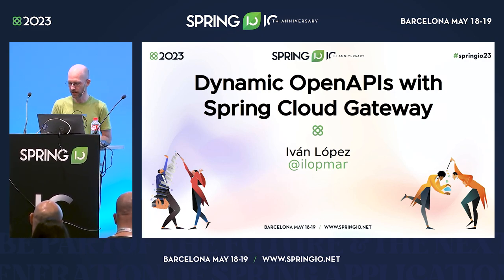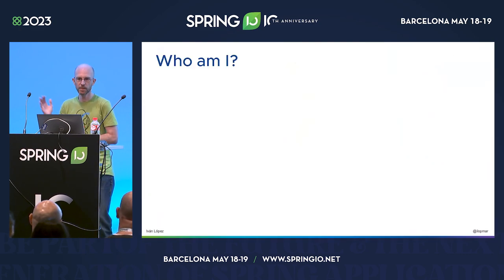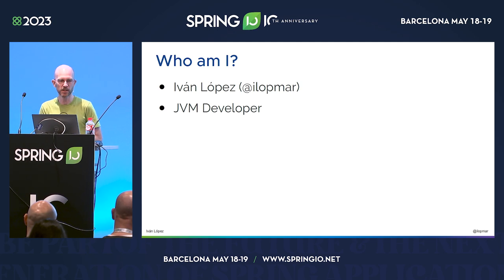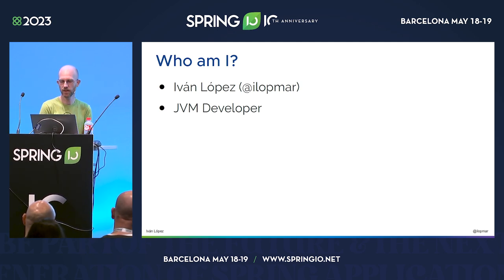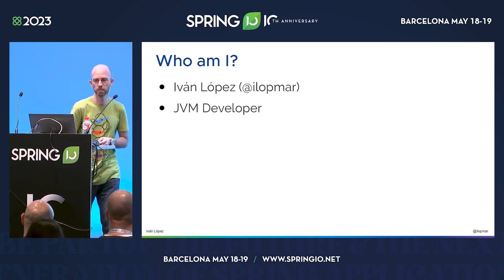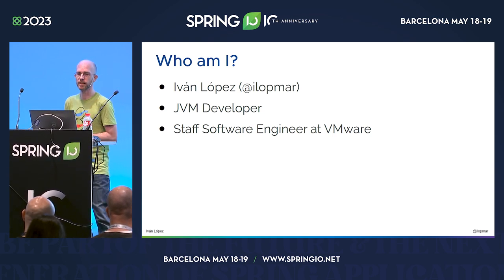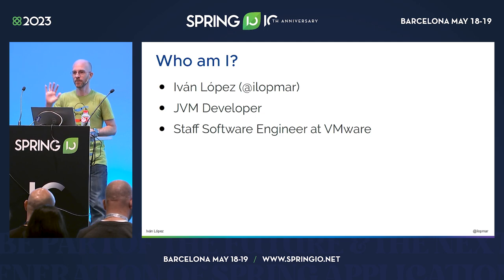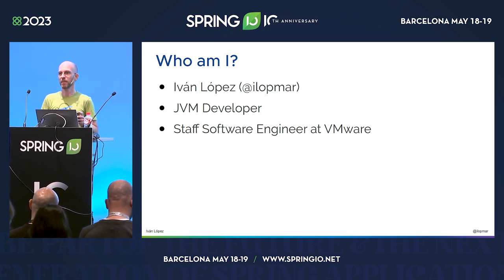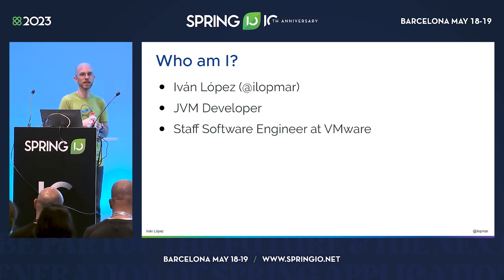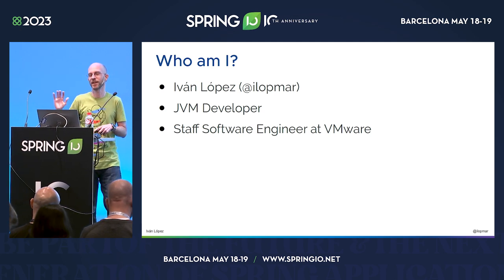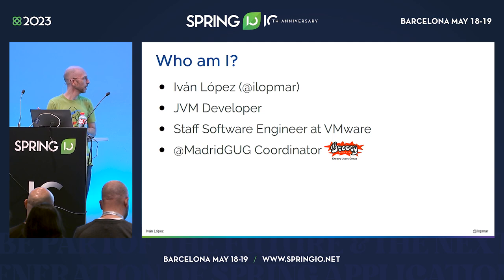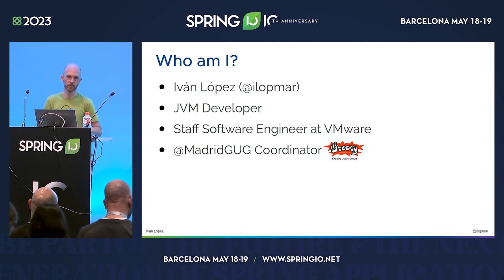And at the end, we will see everything in action. Let me introduce myself very quickly. I'm Ivan Lopez, Iloman on Twitter. I am a JVM developer. I've been using JVM for a long time, mostly Java and Groovy. I am currently a staff software engineer at VMware. But even if I'm working at VMware, I'm not working on Spring itself. The nice thing is that the Spring team is on my Slack, so they are really close when something happens. I'm also the Madrid Group coordinator — I'm from Spain, from Madrid.